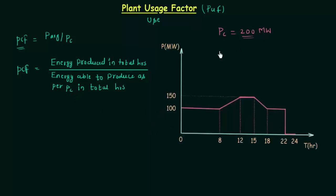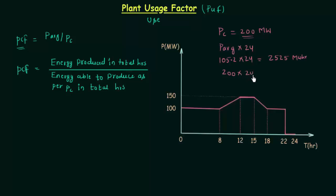The plant is producing energy which is P average multiplied with 24 hours. The average power is 105.5 megawatt multiplied with 24, and we got the energy the plant is actually producing in 24 hours as 2525 megawatt-hour. According to PC, we got 200 megawatt multiplied with 24 which is equal to 4800 megawatt-hour. So the plant is able to produce 4800 megawatt-hour according to installed capacity but it is producing 2525 megawatt-hour, and the ratio is given by PCF.